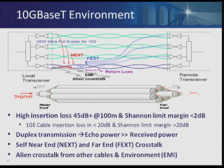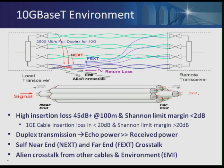In a typical data center application where wires are pulled in a six-around-one configuration, there could be a scenario where you have a victim cable and six aggressors. All of these aggressors are inducing alien NEXT on top of the victim cable. All of these impairments have to be taken into account for a proper design of 10G Base-T to operate at 100 meters.